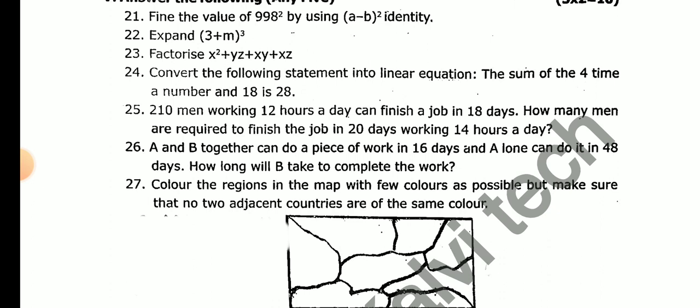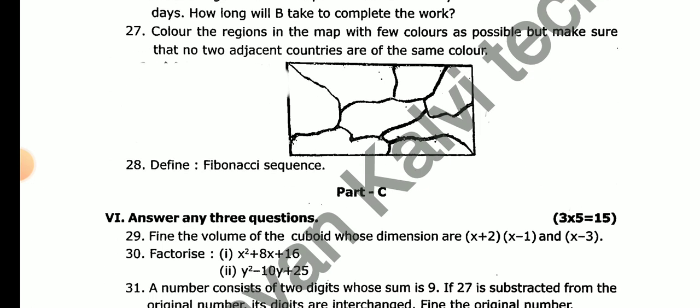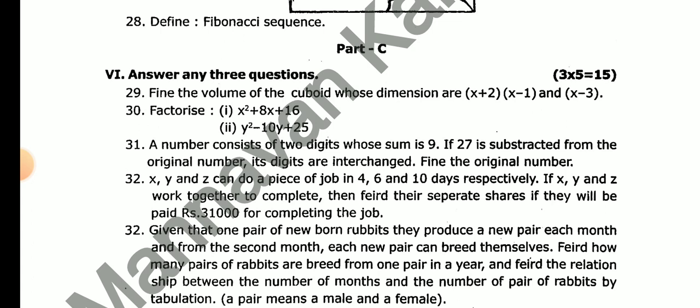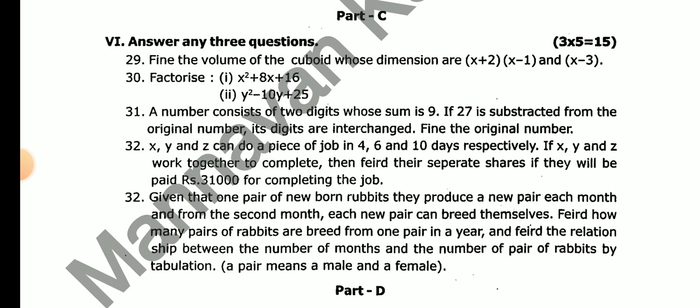Color regions in the map with the fewest colors possible, but make sure that no adjacent countries are of the same color. Find the value of cubed roots. Factorize: (i) x²+8x+16, (ii) y²-10y+25. A number consists of two digits whose sum is nine. If 27 is subtracted from the original number, the digits are interchanged.